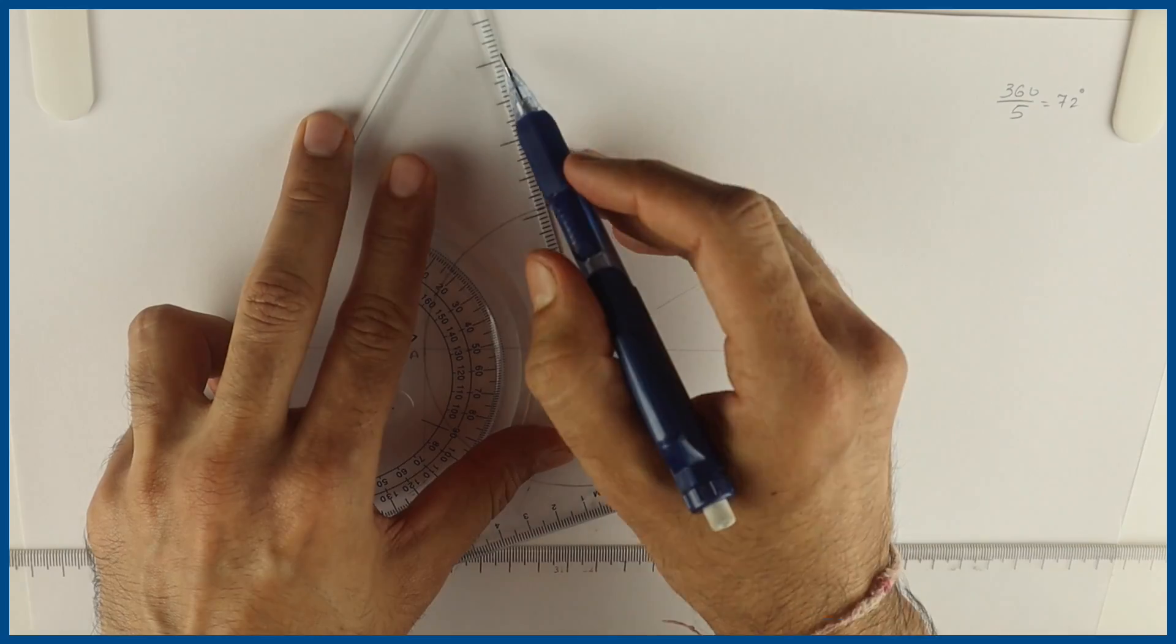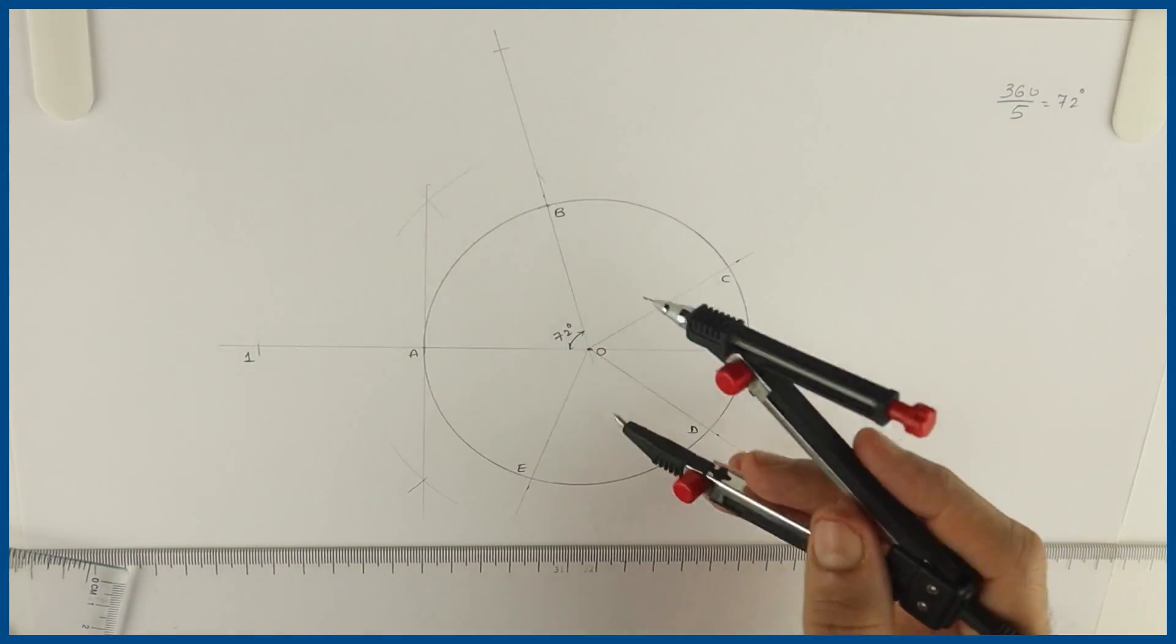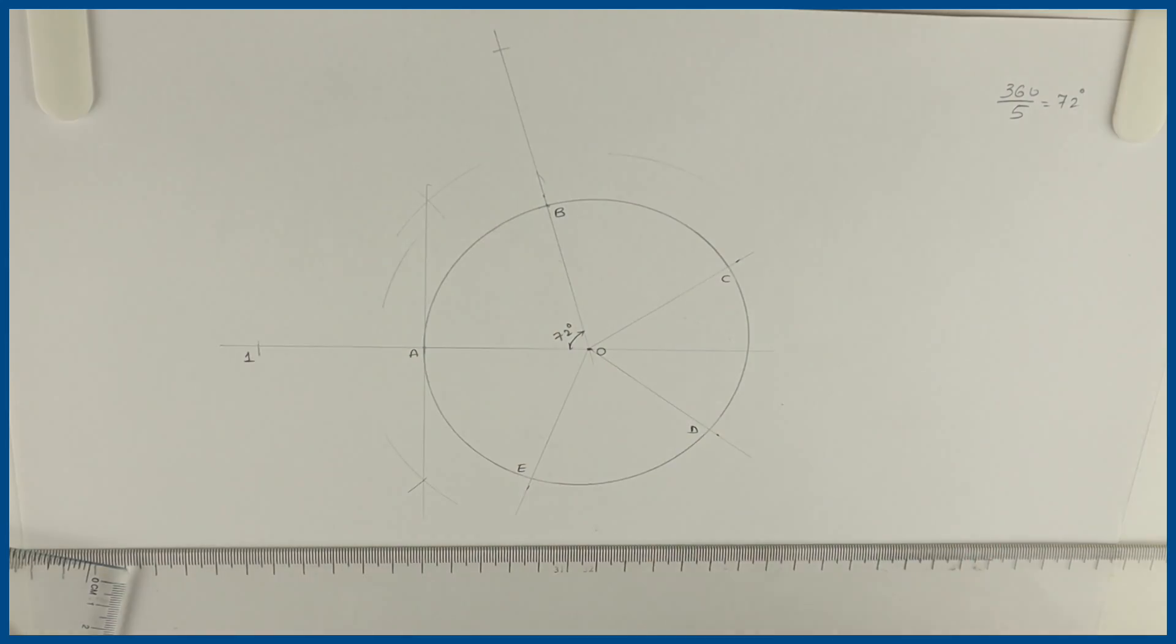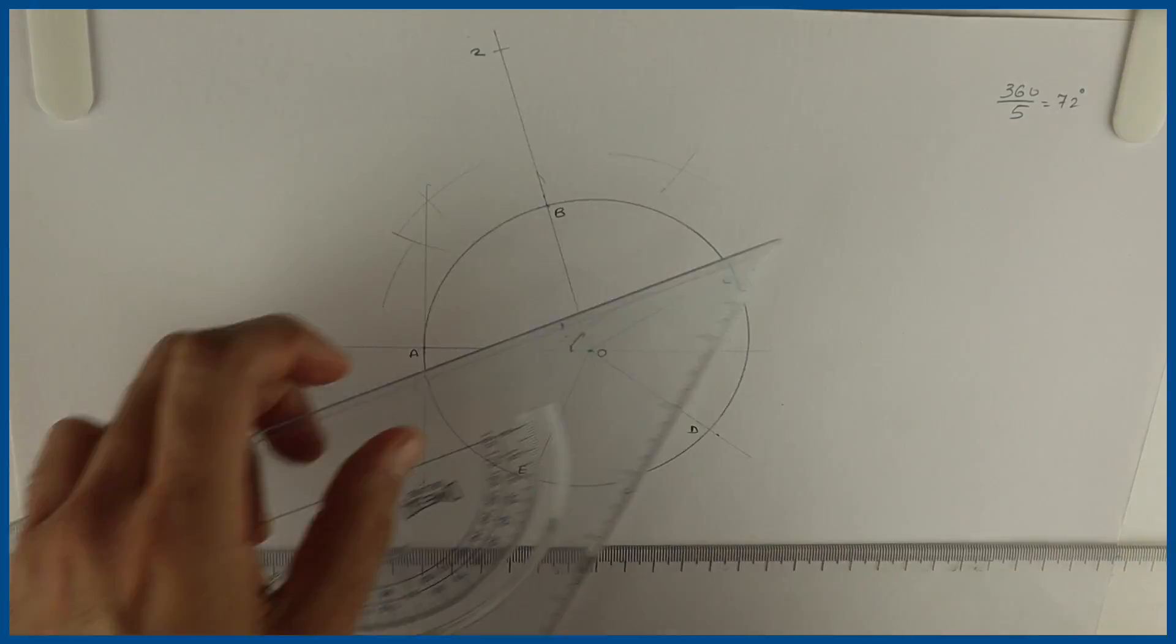Same way you take OB. Extend OB. You will get O2. Bisect O2. Again you will get a tangent.